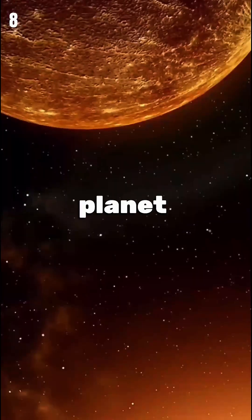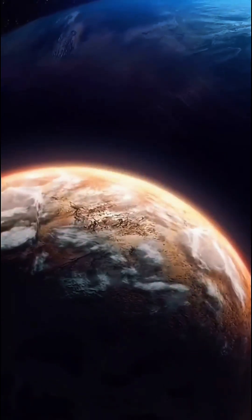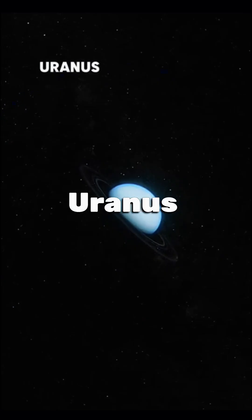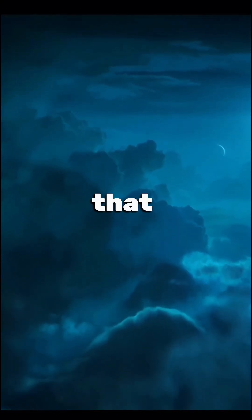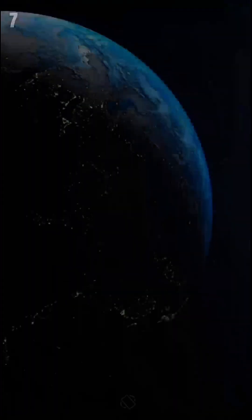What if I told you there's a planet where it literally rains diamonds? On planets like Neptune and Uranus, the intense pressure turns carbon into diamonds that fall like glittering rain.